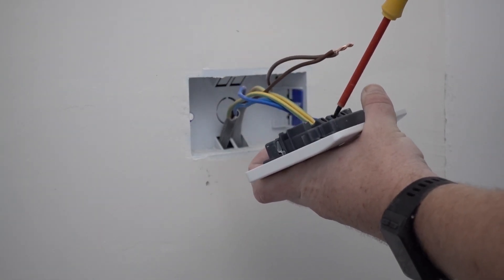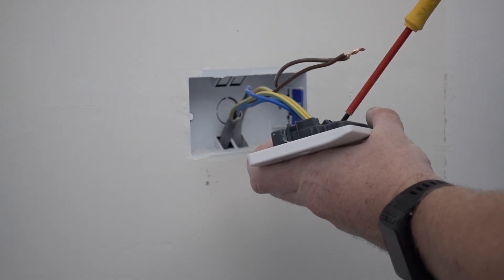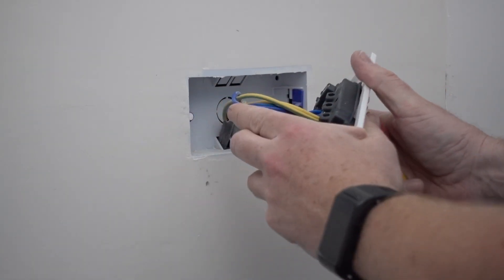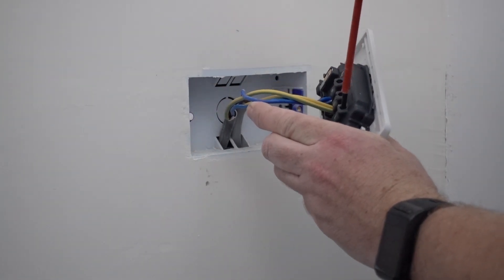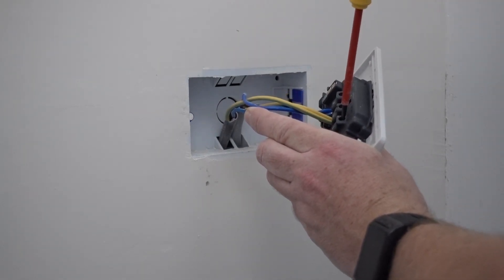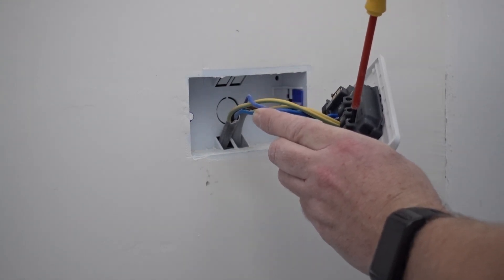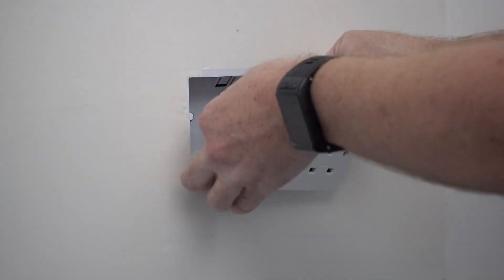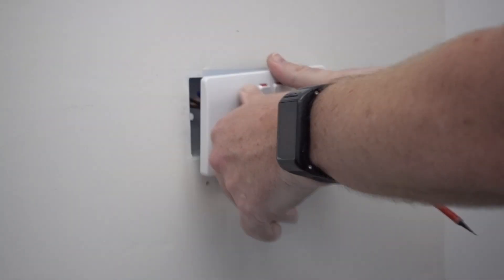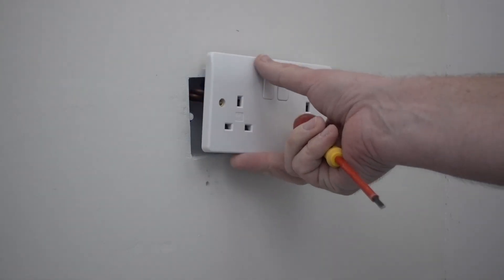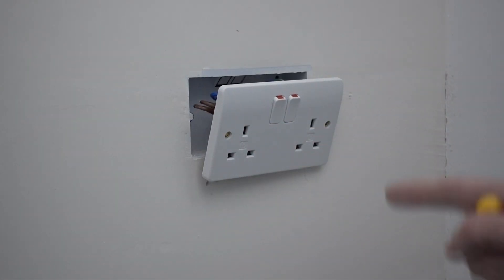Now you want your conductors tight, but not over tight. And then you just dress your cables in, push them to one side, turn them to the other. But make sure they're away from the front plate screws, because that's a common error. You take your front plate screws straight onto the live and then you've got a fault when you test it.